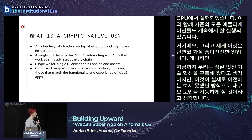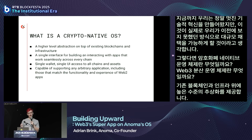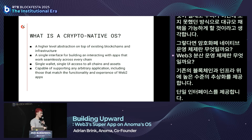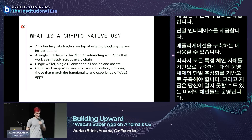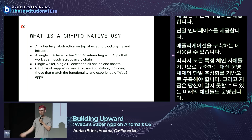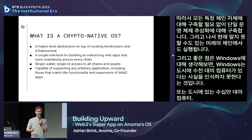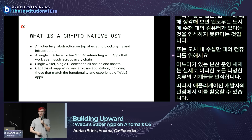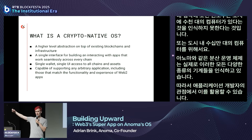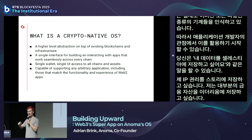A Web3 distributed operating system is a high level of abstraction on top of existing blockchains and infrastructure. It gives you a single interface to build applications against, so instead of building against every specific chain, you build against a single OS abstraction—and it runs on future chains you may not even know about yet. Unlike Windows which isn't aware of thousands of computers in a city, Anoma as a distributed OS is aware of all these different machines. Application developers can say: I'd like to store my data on Celestia, my IP rights on Story, and my financial assets on Ethereum—and the OS knows how these are connected and can move assets between them.